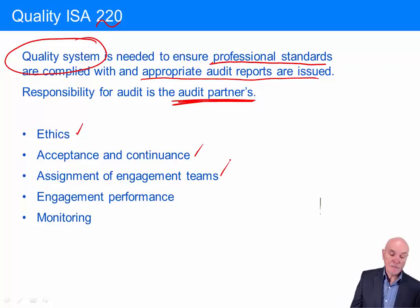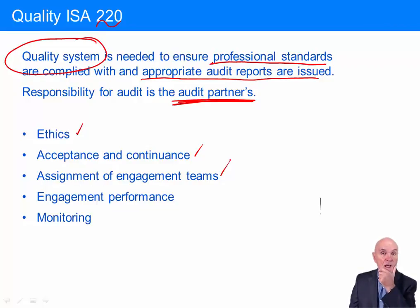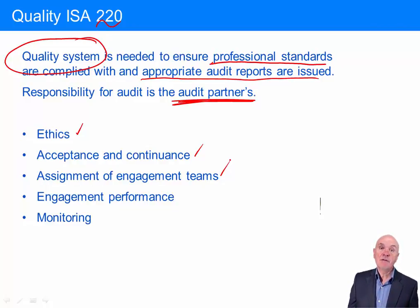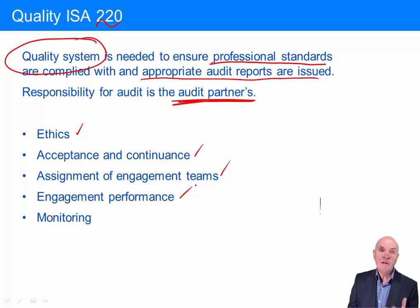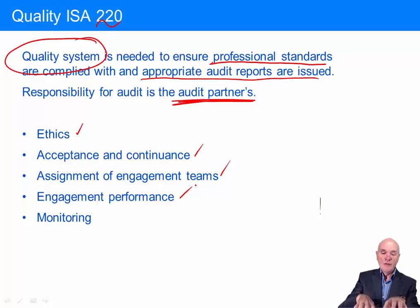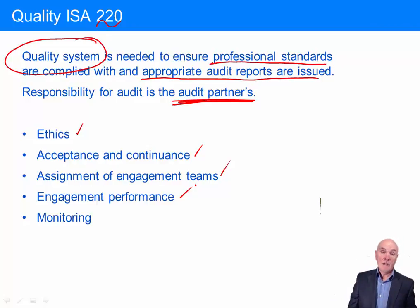There is also assignment of the engagement teams — which people are we going to assign to this audit, what mix of skills do we need, how many years of experience, so that they can carry out the audit to a competent quality level. And whilst the audit is being performed, how do we know it's being performed correctly? What is the supervision and what is the review? We need to make sure that relatively junior members' work is reviewed by the supervisor, then by the manager, then by the partner. This needs a system to ensure that all the reviews take place.